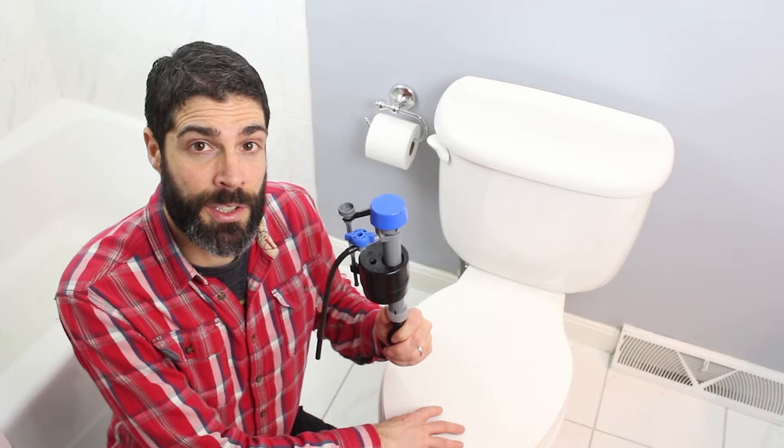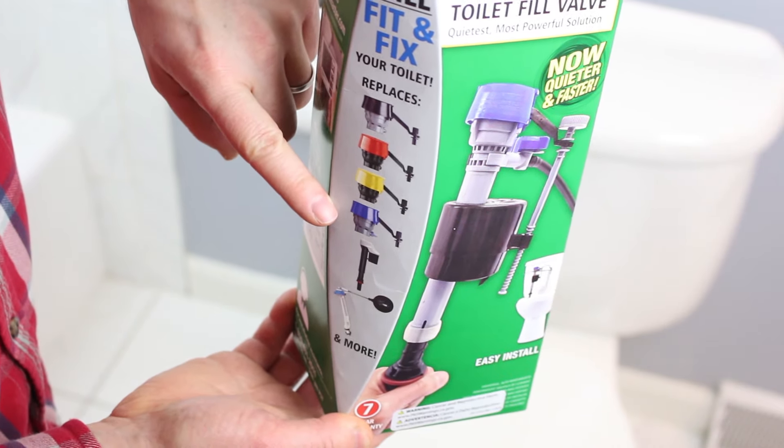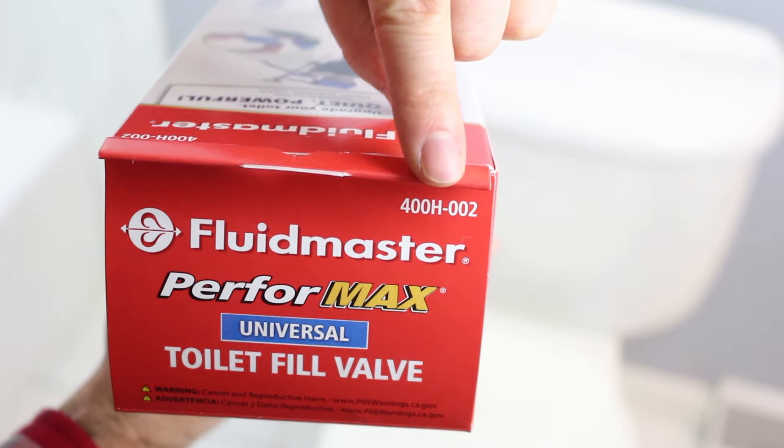In this video, we're going to show you how to fix a running toilet by replacing the fill valve. The 400H replaces a variety of different fill valves, which you can see on the side of the box. This is the 400H-002.